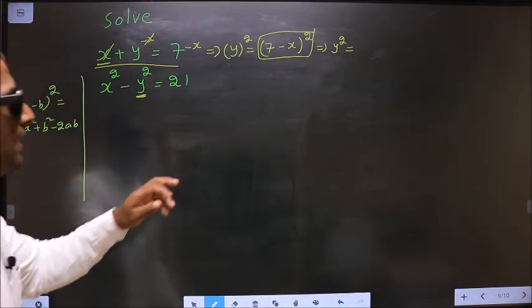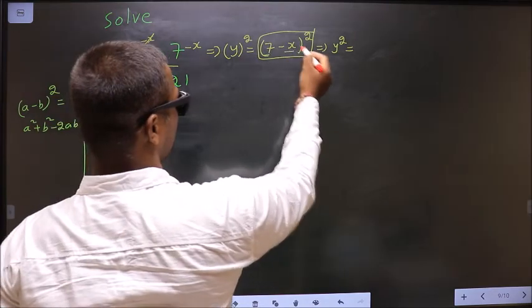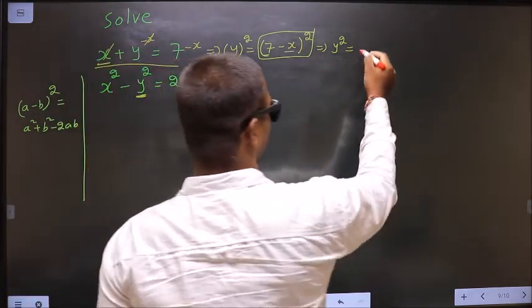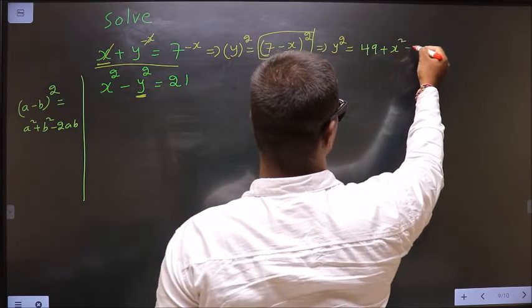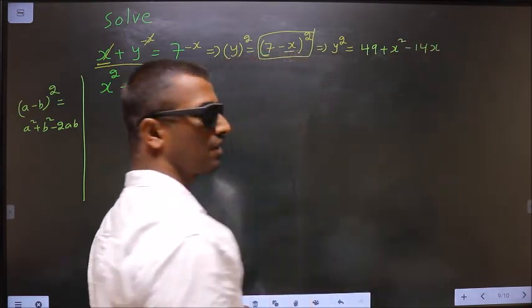In place of a, 7, in place of b, x. So 7 square is 49 plus x square minus 14x. Clear?